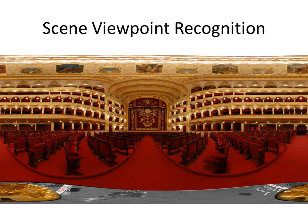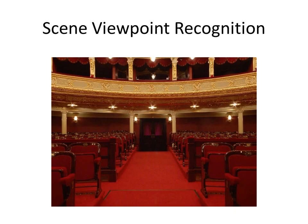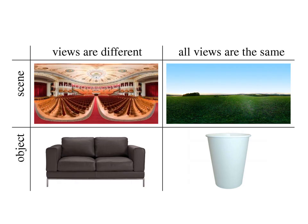Just as with objects, viewpoint recognition is important for acting within scenes. For example, a view of the stage allows you to watch the show, and a view of the rear of the theater allows you to find the exit. Both objects and scenes may exhibit rotational symmetry. For example, an observer standing in an open field can turn and see a nearly identical view in every direction. Similarly, a cup presents similar views when it is rotated.